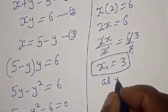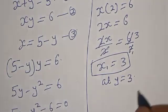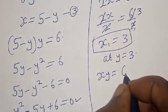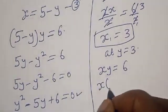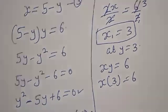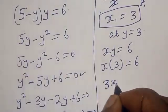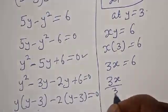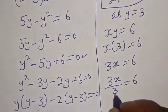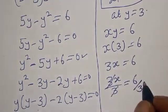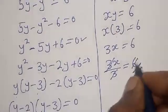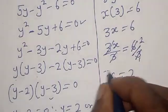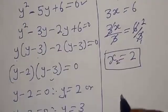At y is equal to 3, we have s y is equal to 6. So s into 3 is equal to 6. We have 3s is equal to 6. Let's divide both sides by 3. We have 3s over 3. Therefore s is equal to 2. Let's call this s2. Therefore our final answers are: s1 = 3, y1 = 2 and s2 = 2, y2 = 3.